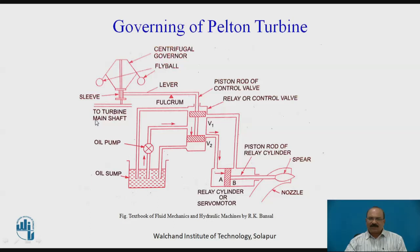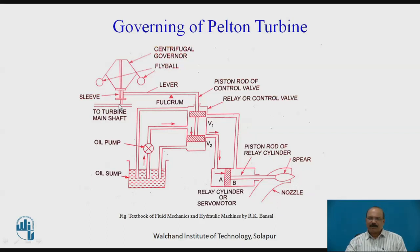Whenever power consumption reduces at the load center, that suddenly affects the generator. The generator starts running at higher speed. Whenever there is a reduction in load on the power station, it directly affects the generator, which is coupled with the turbine, and the turbine is coupled through the shaft to the governor. We will now study how we exactly control the nozzle through the governor.